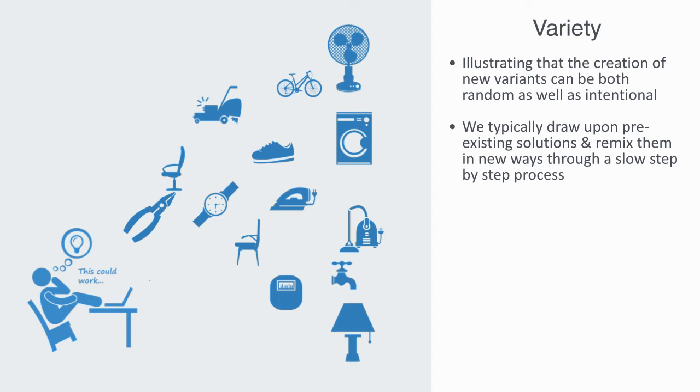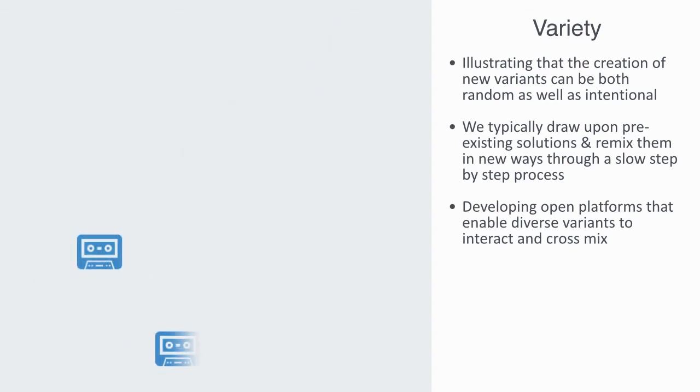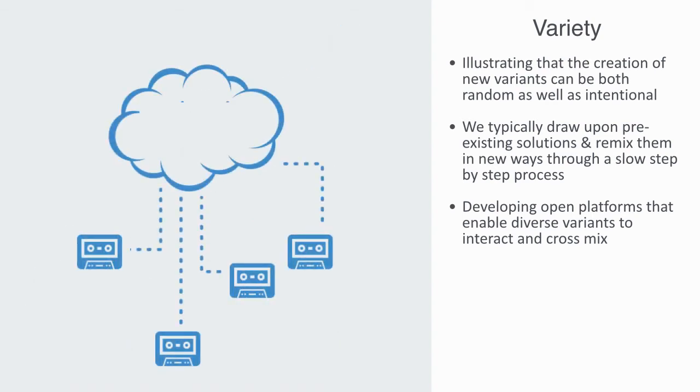Enabling this process means developing open platforms that enable diverse variants to interact and cross mix. For example, the rise of the internet and YouTube has put all our music on the same platform right next to each other. The result being a great acceleration in the production of mash-up mixes between all types of very disparate music, many of which don't work, but some do.